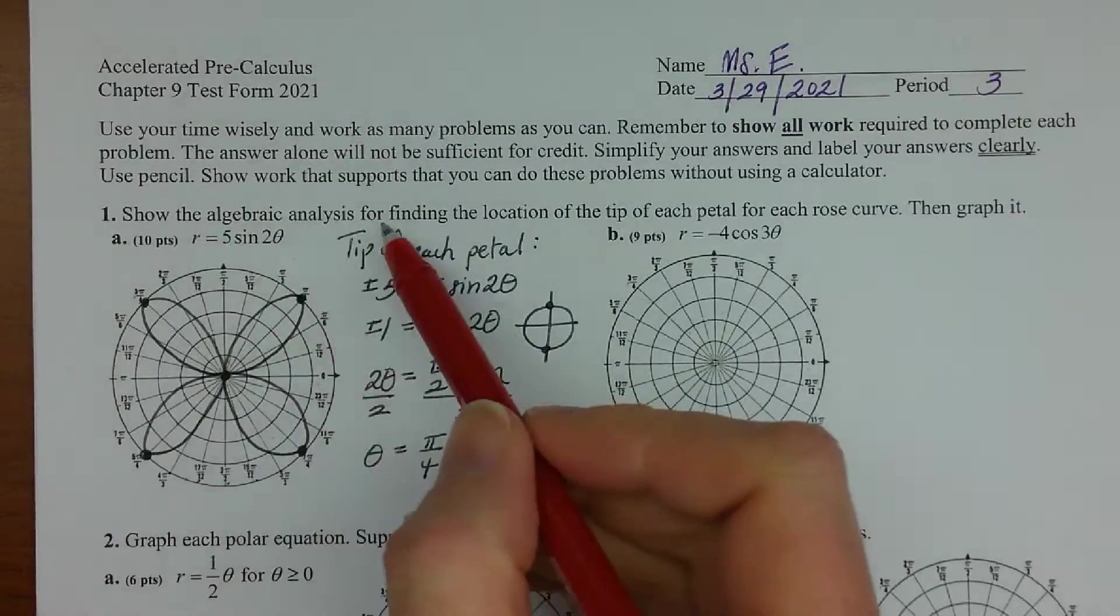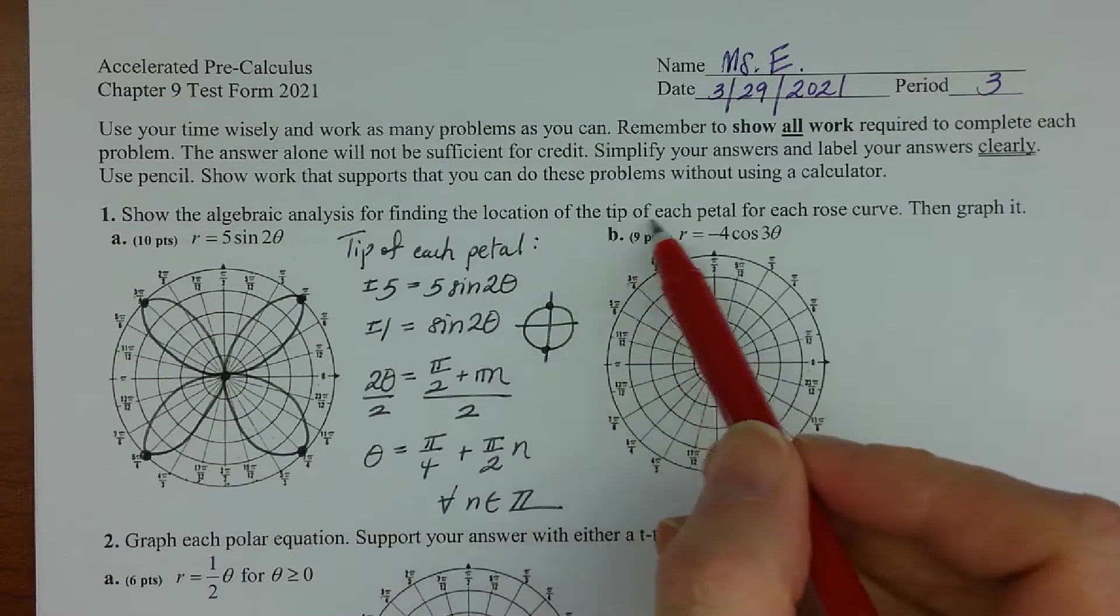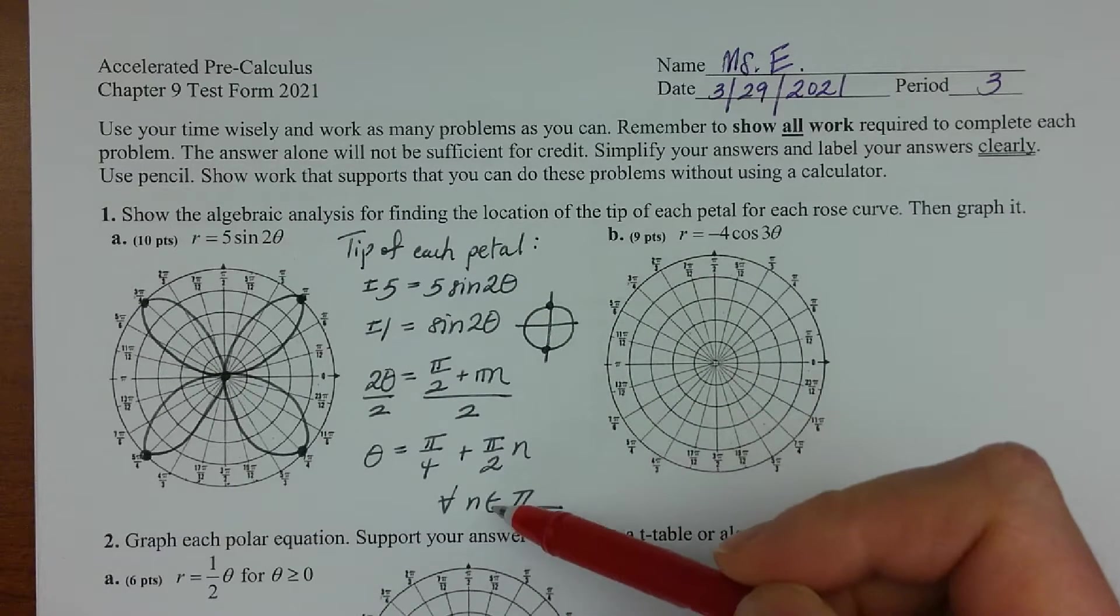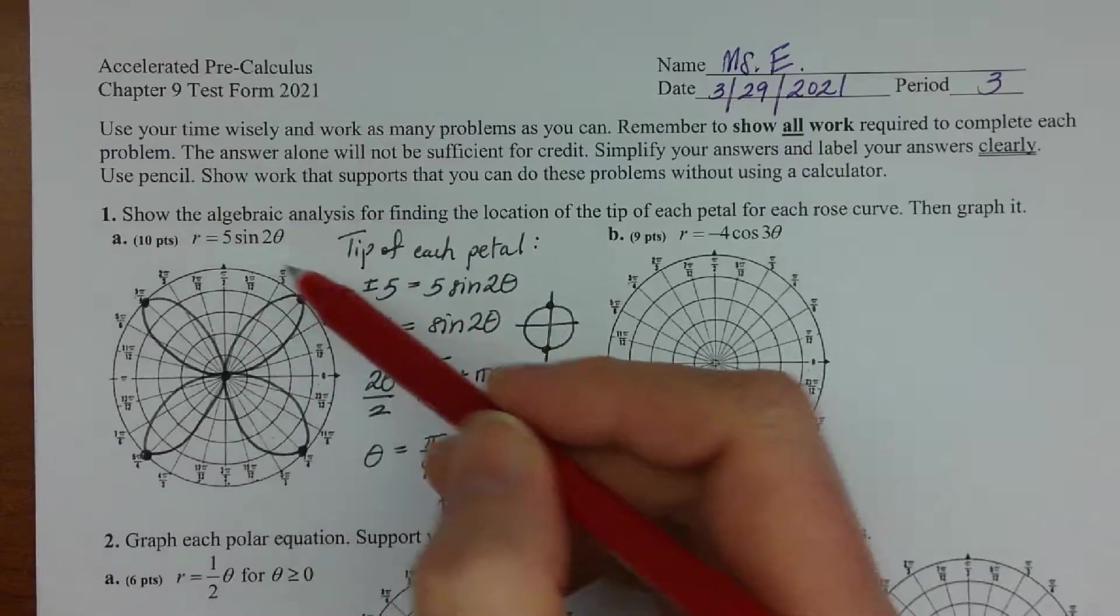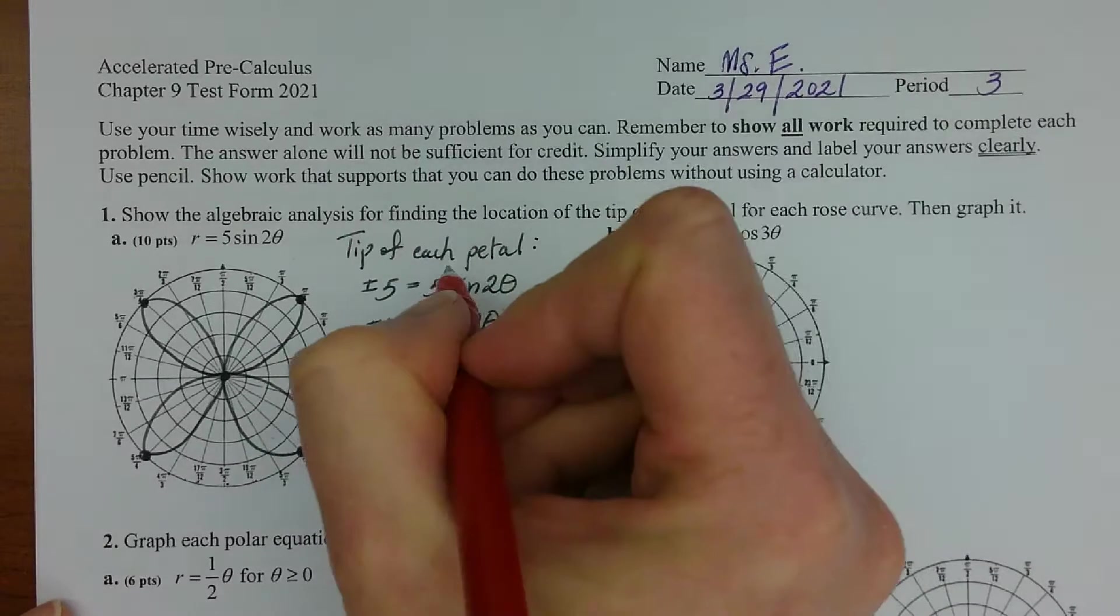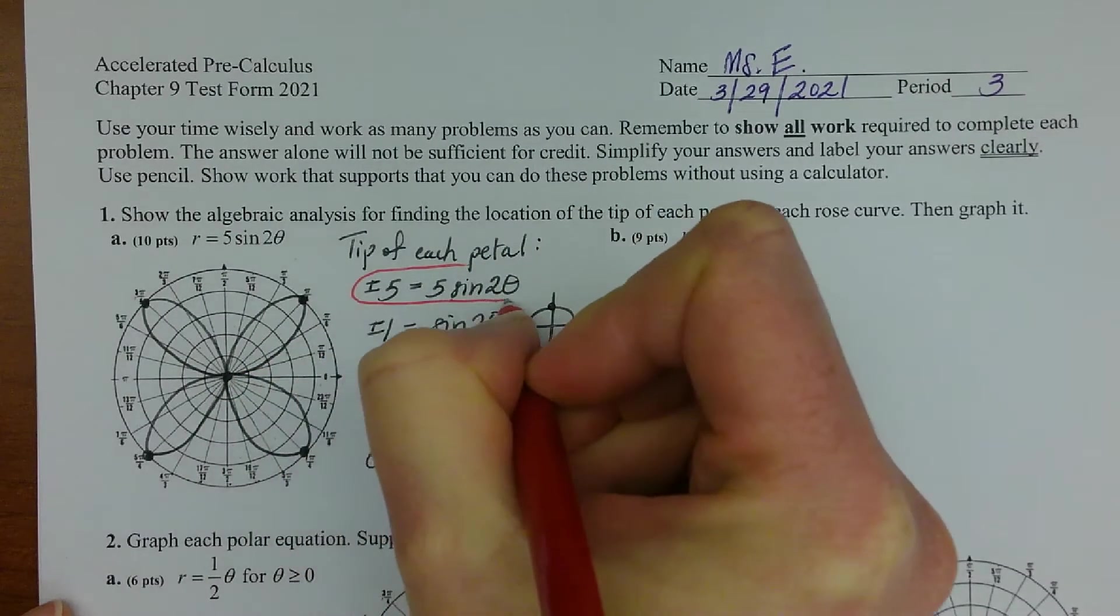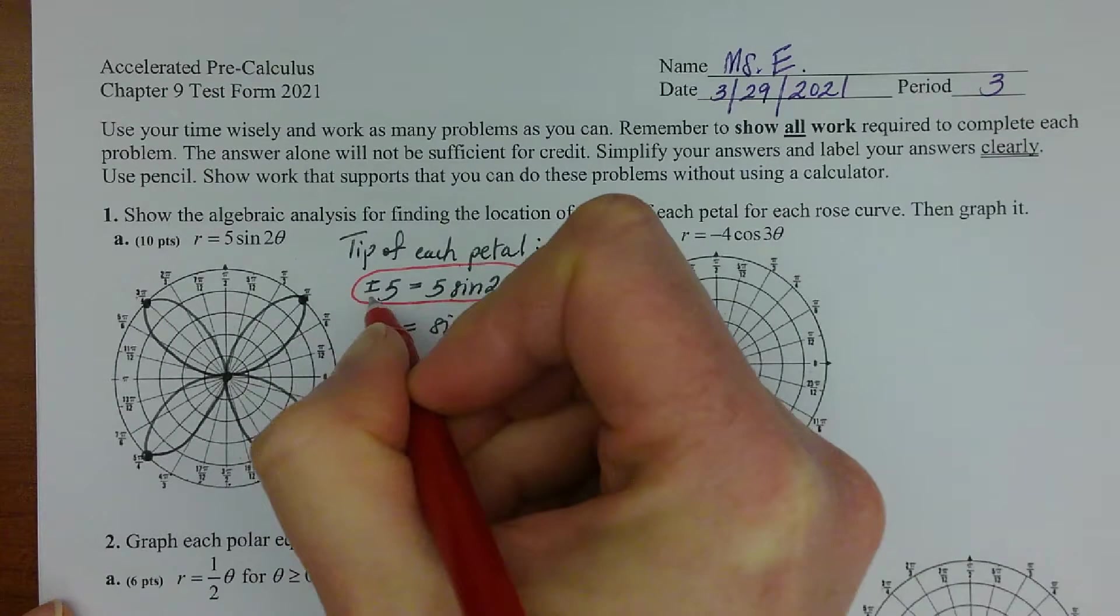And that's really what I was looking for. So, points. Notice the direction said show the algebraic analysis for finding the location of the tip of each petal for each rose curve, so I'm looking for work like this to give you part of the credit. So first thing it's worth two points to have set your expression equal to plus or minus five.